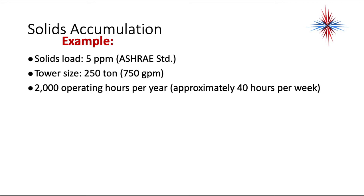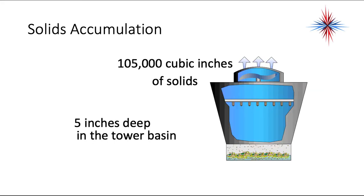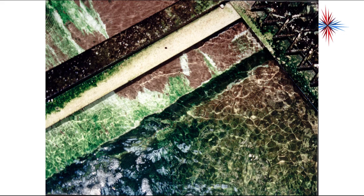There are some guidelines for solids accumulation. For solid load, you can't have over five parts per million — that's the ASHRAE standard. For example, a 250-ton tower with 700 gallons per minute and 2,000 operating hours per year — approximately 40 hours per week — will accumulate 105,000 cubic inches of solids over the year. That's five inches deep in the tower basin.